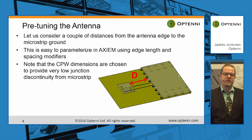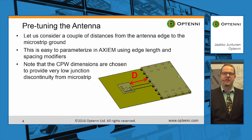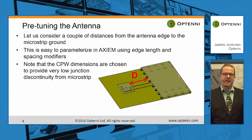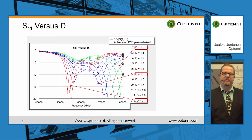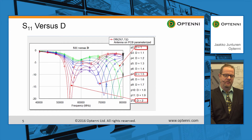Considering the pre-tuning of the antenna: in this picture we can see the initial geometry. We have a parameter d which characterizes the distance of the antenna from the microstrip ground plane. This problem is easy to parametrize in Axiom using shape modifiers and we can study a couple of different parameter values of d. Here we have the S11 versus parameter d, and we see that it influences quite a bit the antenna performance. It is critical to design a proper distance of the antenna from the microstrip ground.